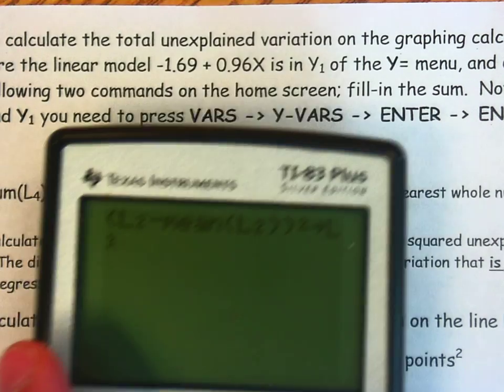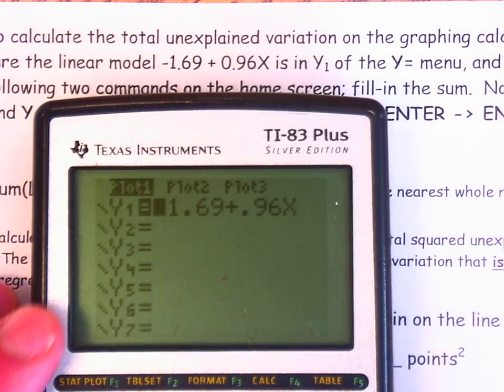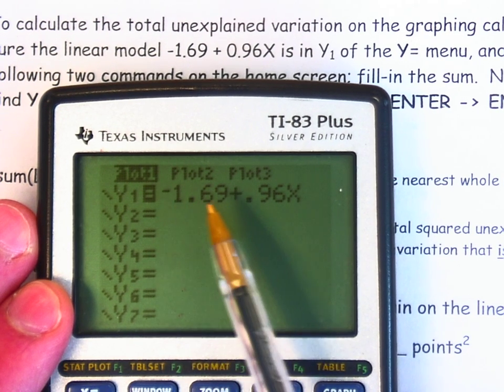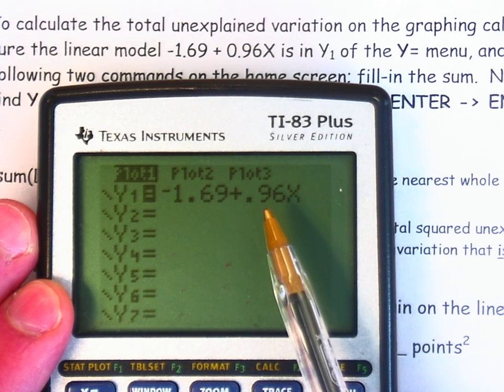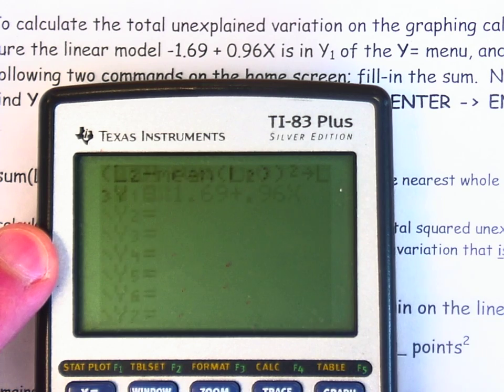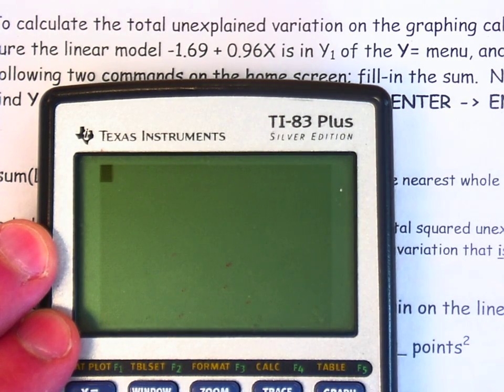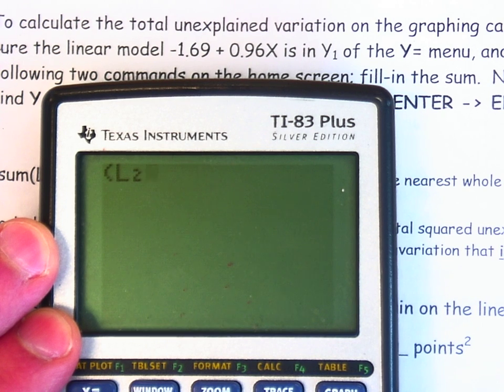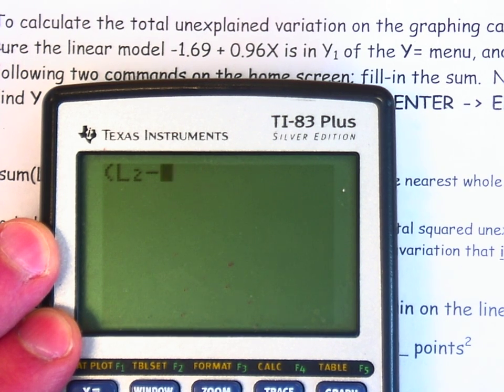So something to be careful with. In order to do this accurately, the first thing that you want to do is put the linear model into list one. So I've entered it, the negative 1.69 plus the 0.96x. Now you're ready to execute this new command on the home screen. So same thing. We'll start with parentheses. My response variable values are in list two, but I want to take the actual values minus the predicted values. And to create the predicted values, I'm going to take the explanatory values in list one and plug them into the equation in y one.